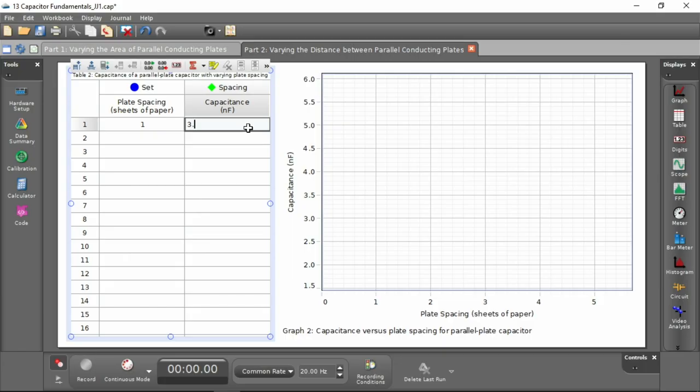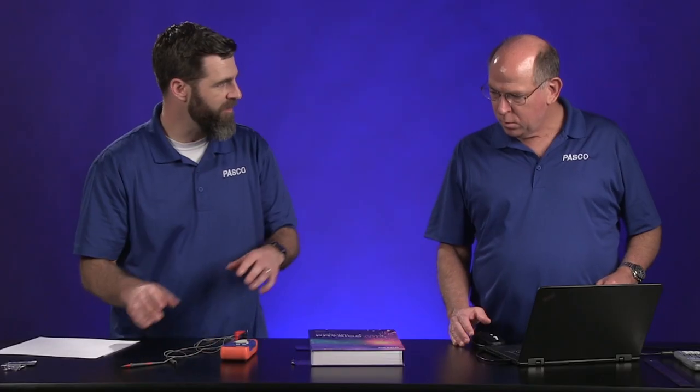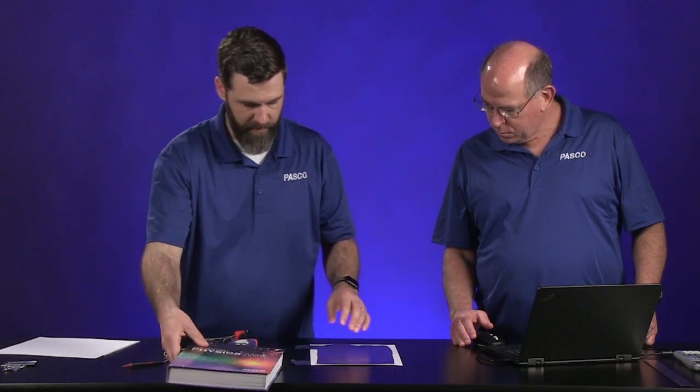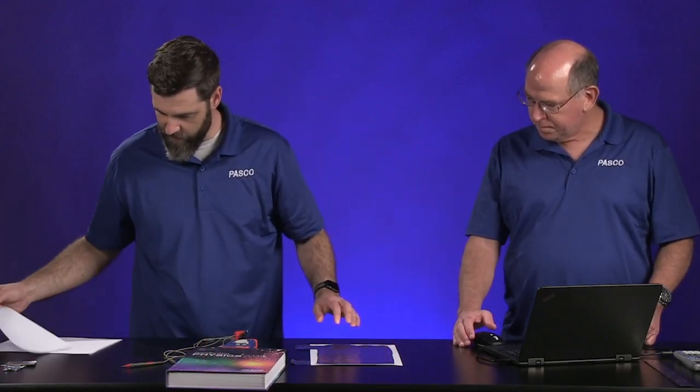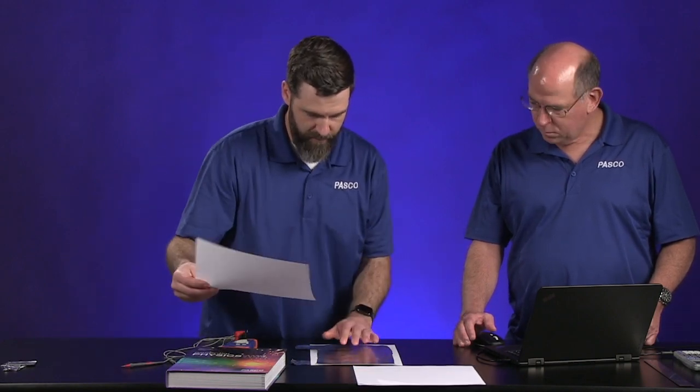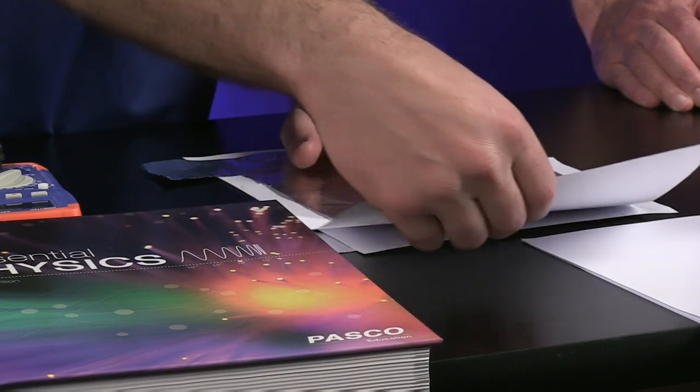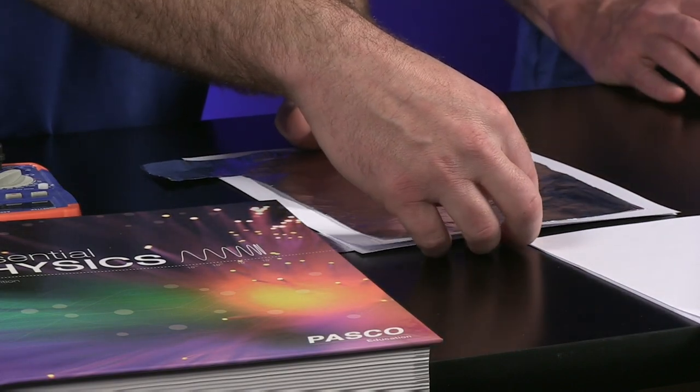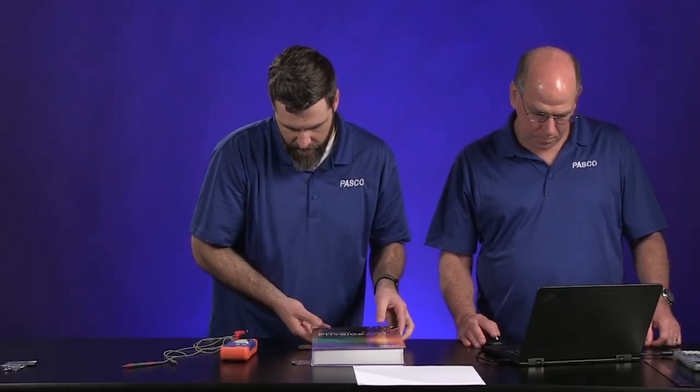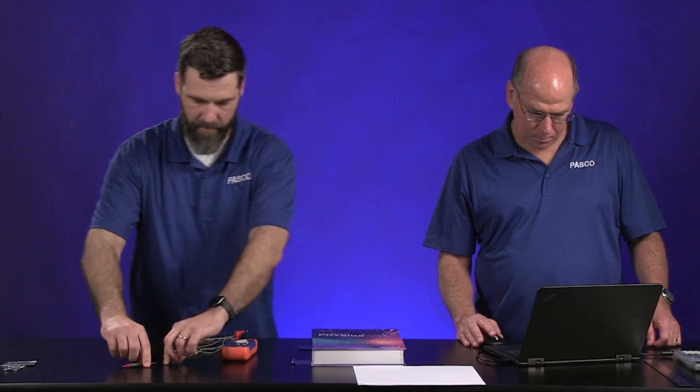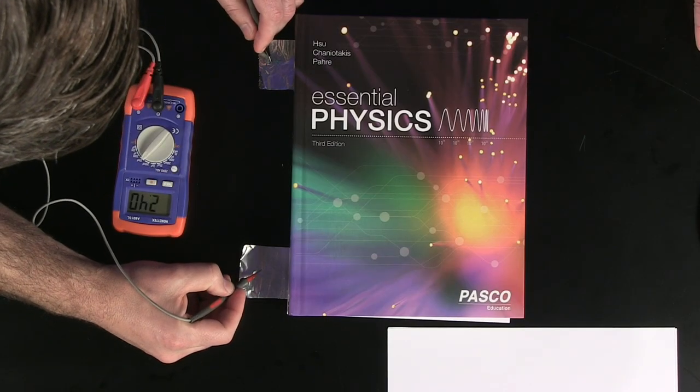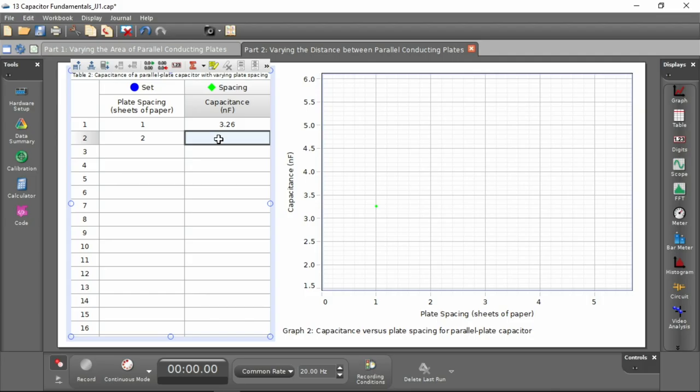That's still not too different. Not too different. So our plates might not be the exact same area. So let me add another sheet of paper. So I'm just going to double the distance in between the plates now by adding another sheet of paper. So now our new capacitance value, ooh, 2.40 went down.